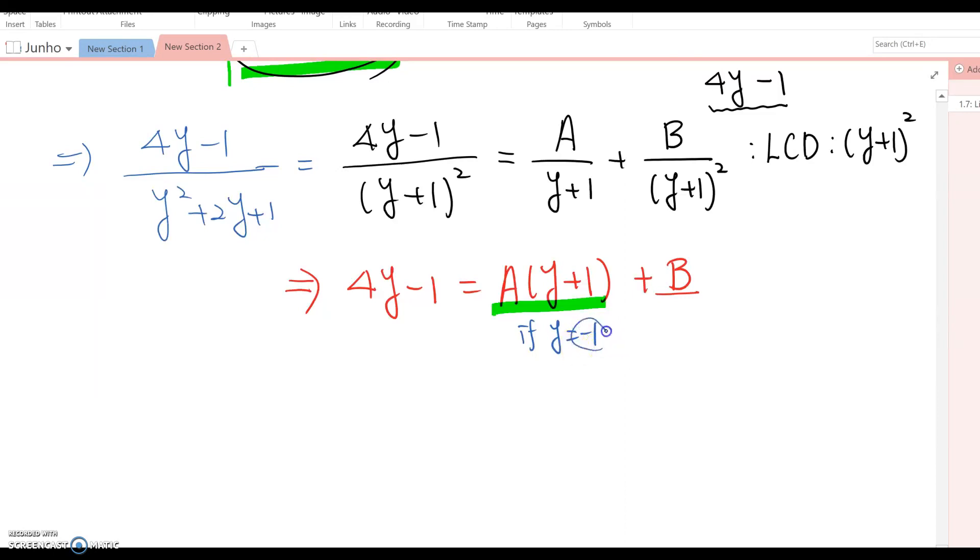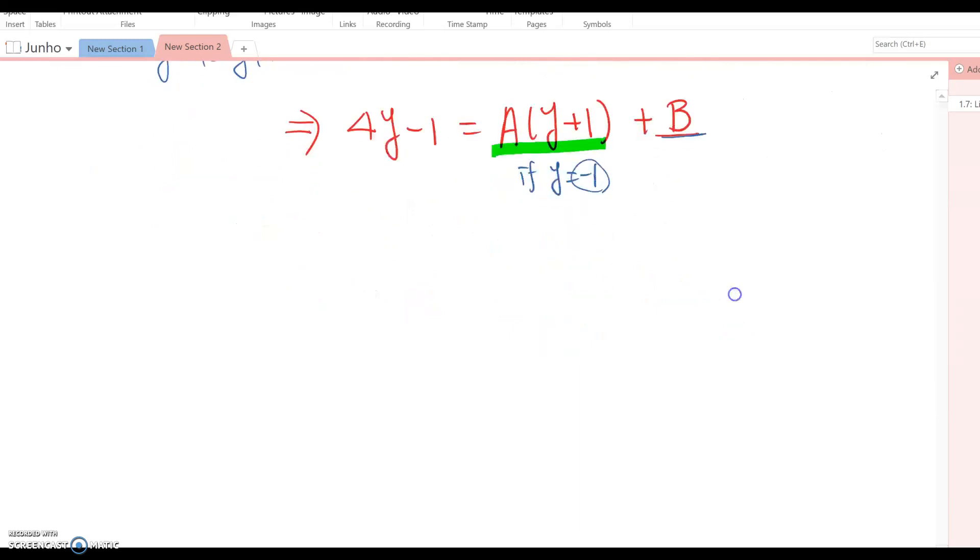Let y = -1. Then 4(-1) - 1 = 0 + B, so -4 - 1 = B, which means B = -5.